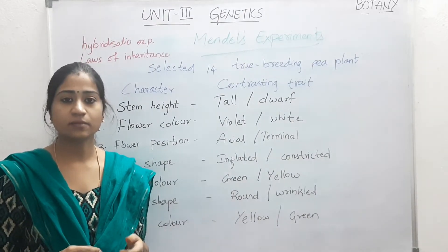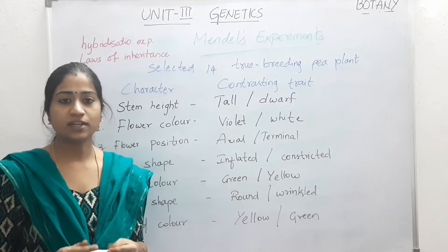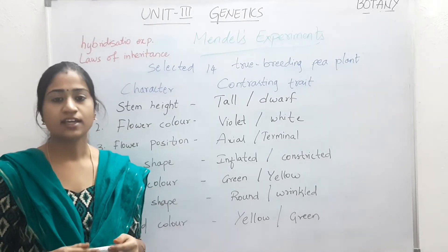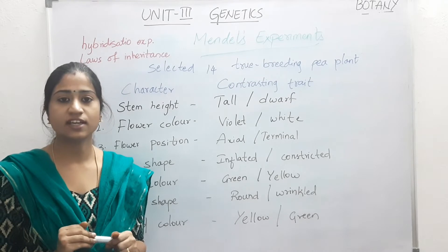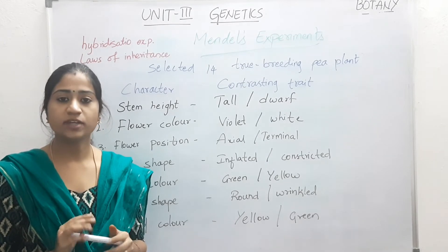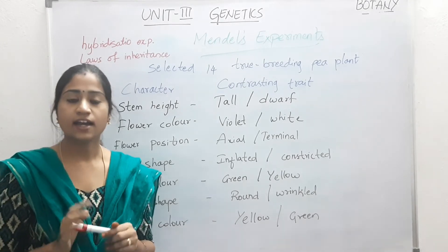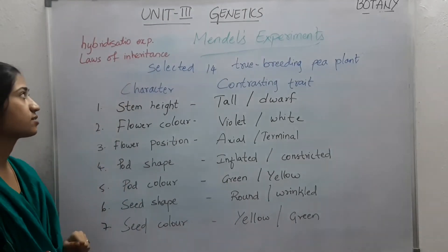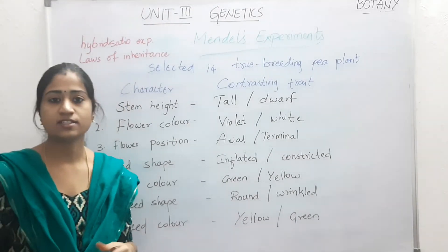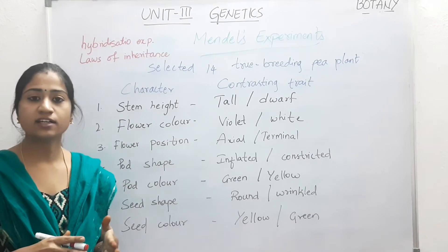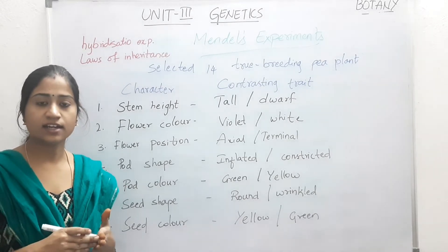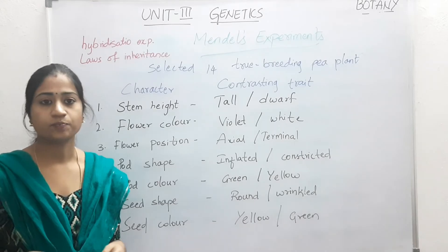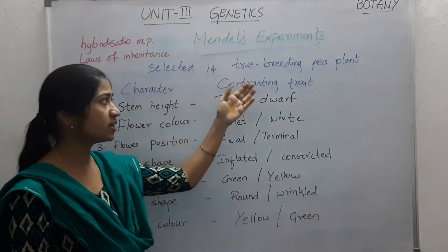It was during the mid-19th century that Mendel conducted his experiments. He conducted hybridization experiments on garden pea plants for 7 years and proposed laws of inheritance. During his experiments, he used mathematical logic and statistical analysis in biology for the first time. He selected 14 true-breeding pea plant varieties